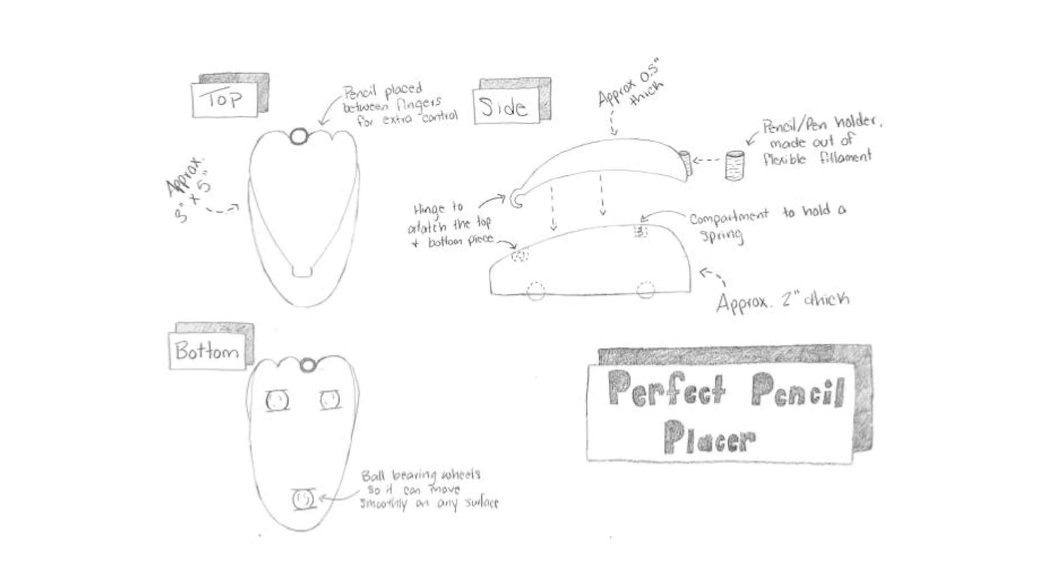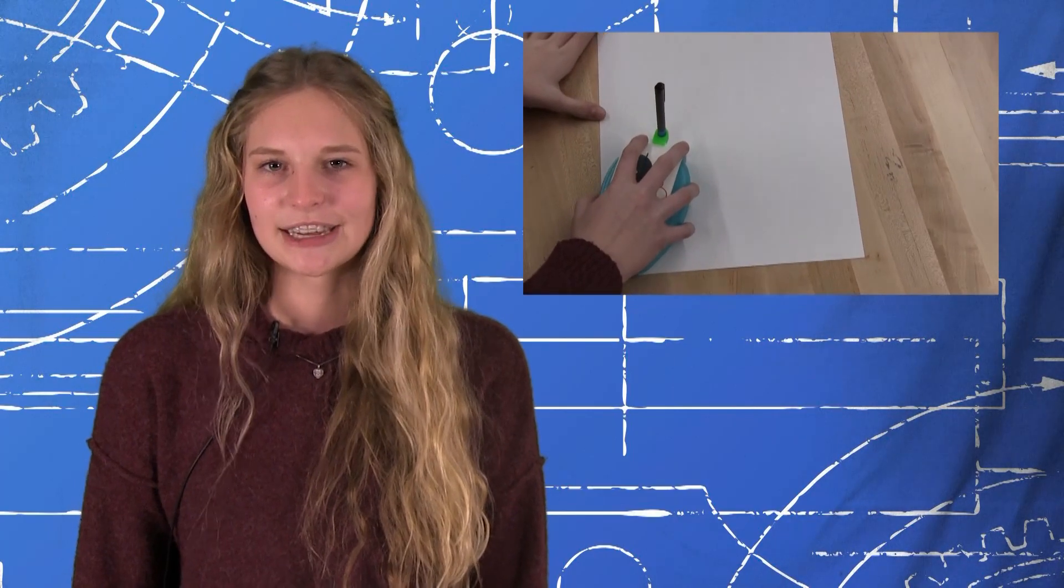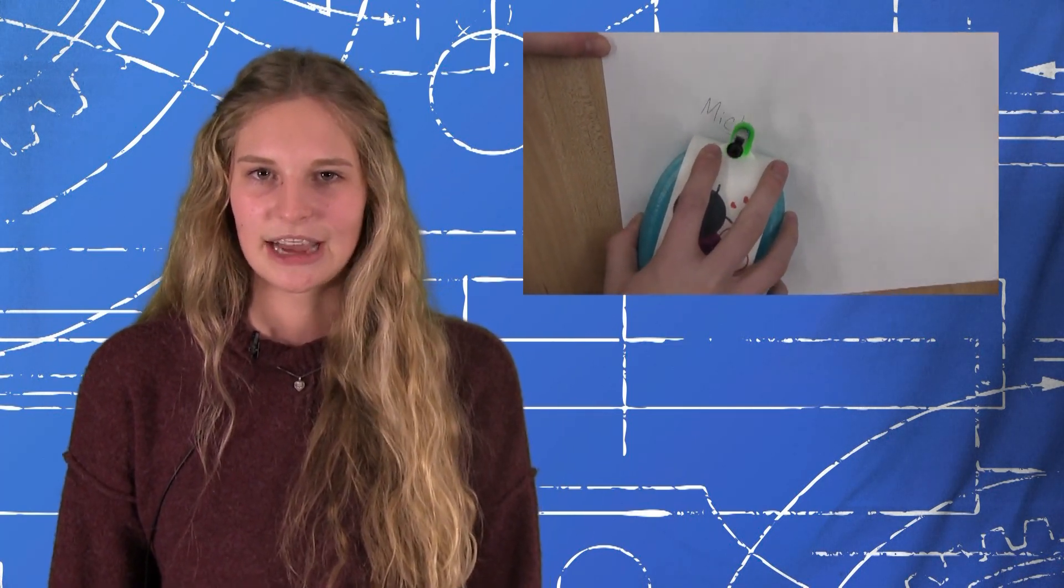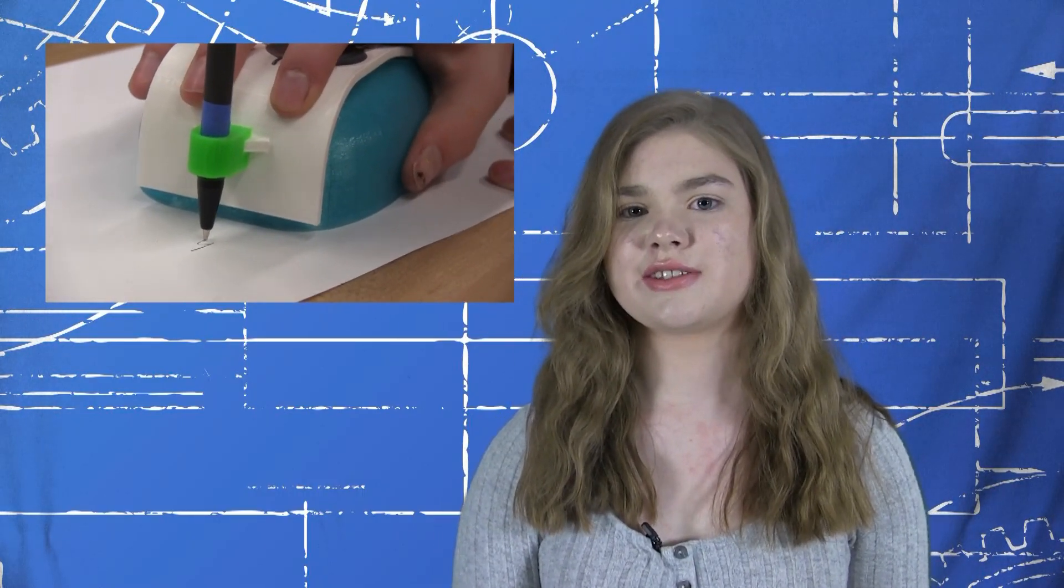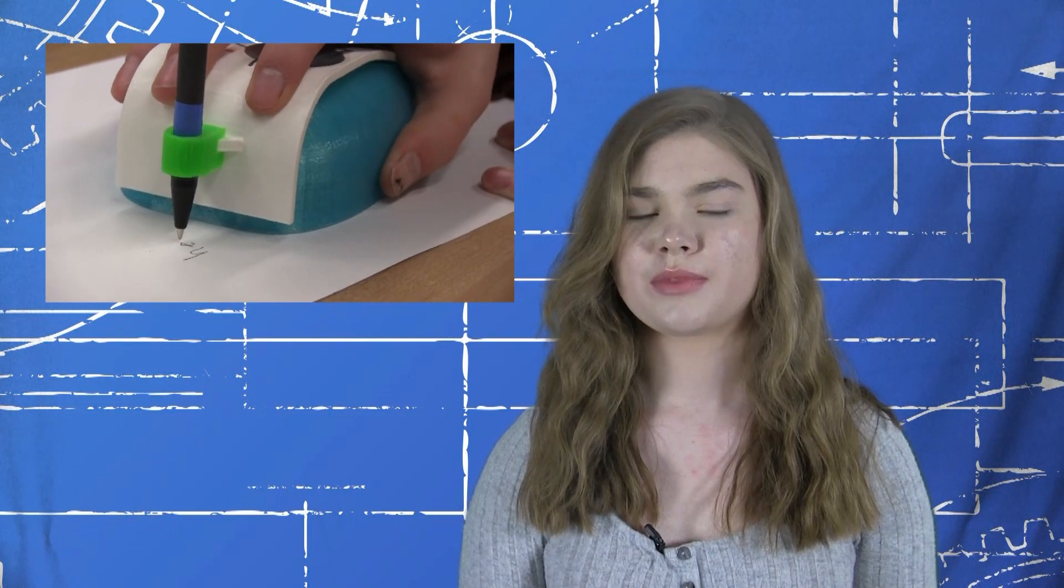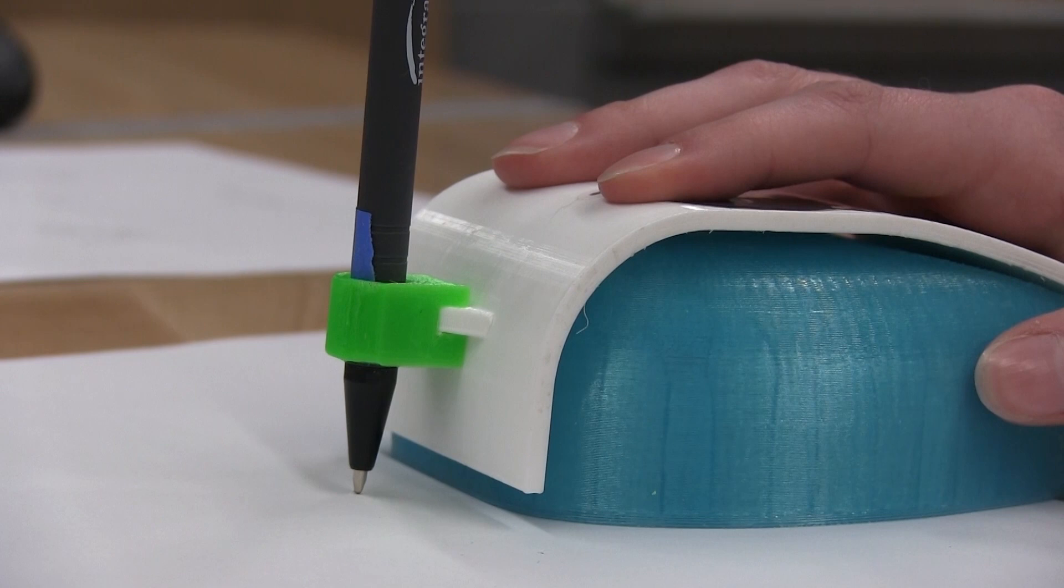The design I refined is an assistive writing aid called the Perfect Pencil Placer. It was developed by engineering students Jasmine and Megan for their end user Michelle who has hypotonia. This is a condition that makes it difficult for her to grip a pen or pencil for a long period of time. As a whole the design performs its function perfectly, and considering it was created over a weekend without any previous knowledge of Fusion 360, it's an incredible achievement.